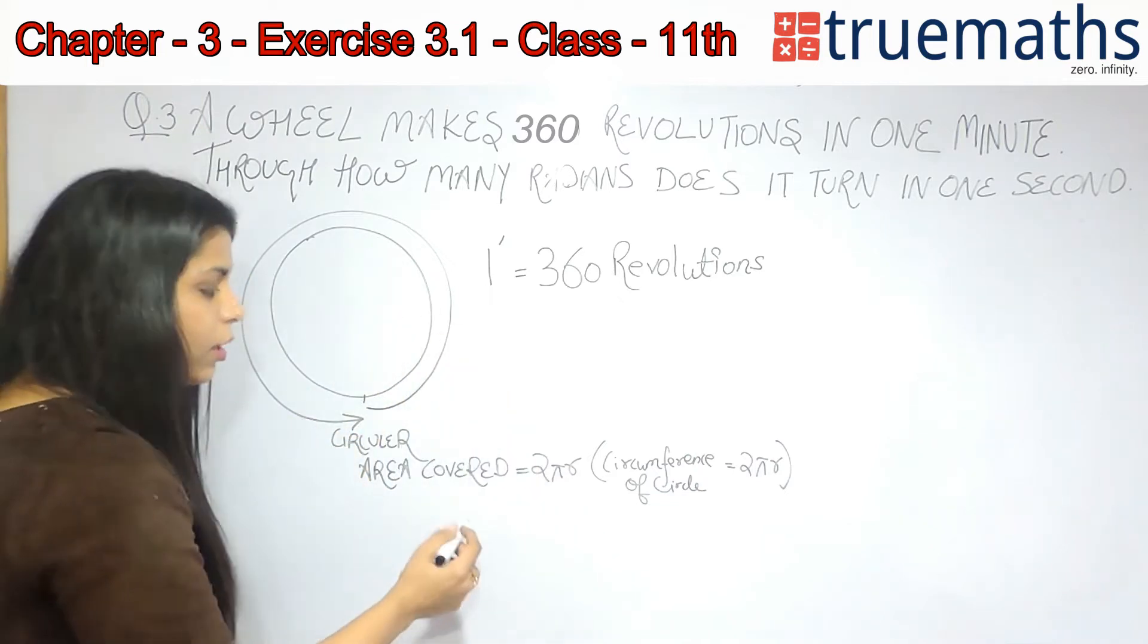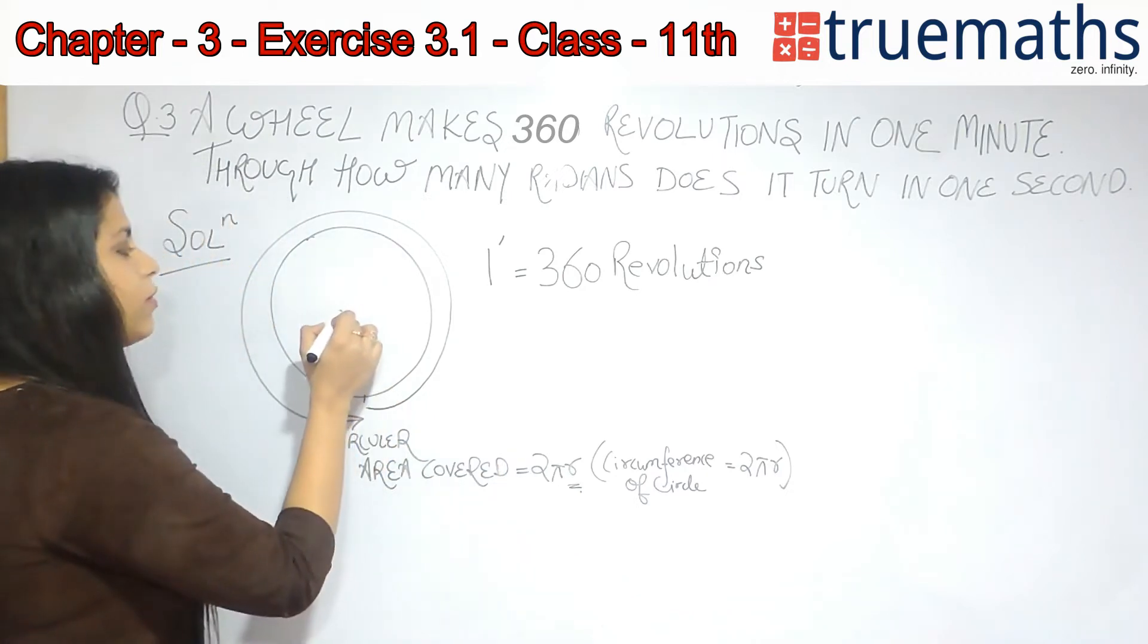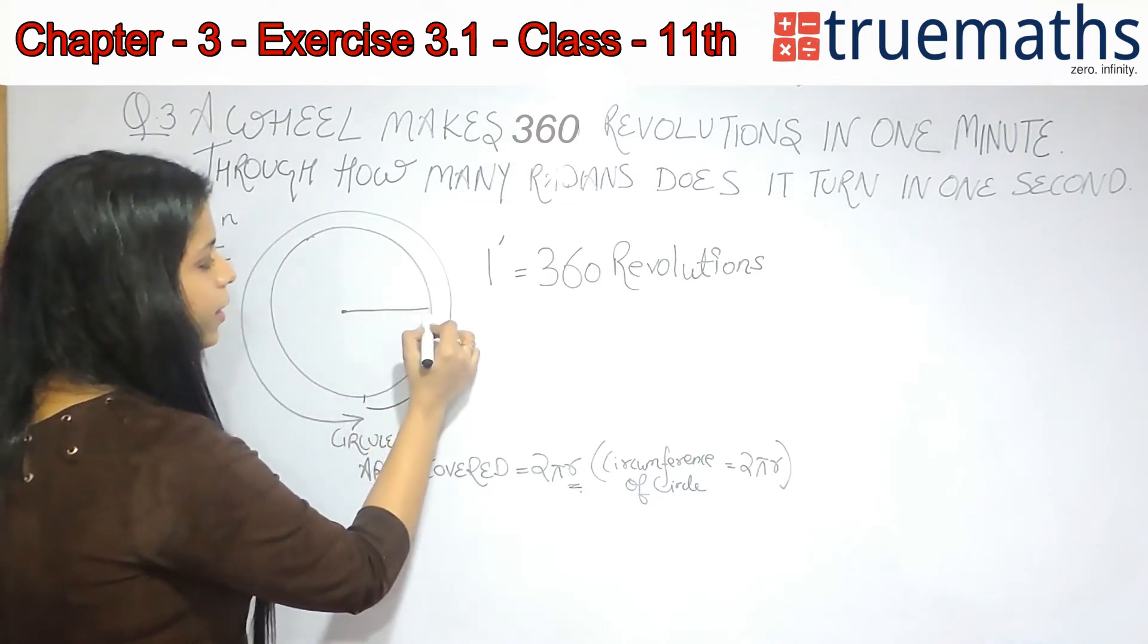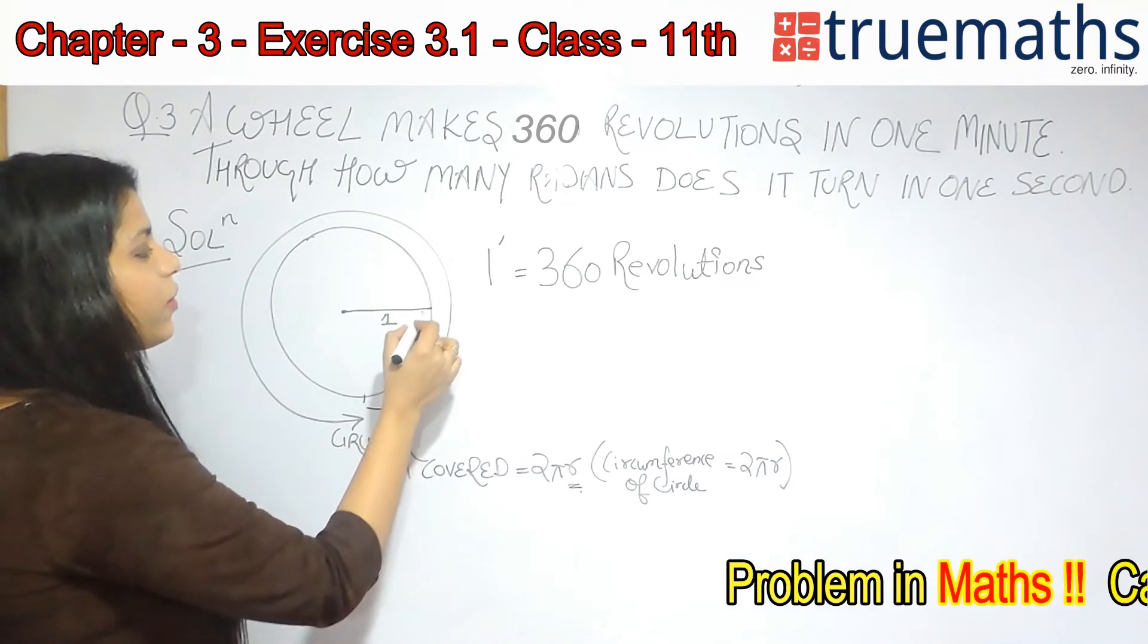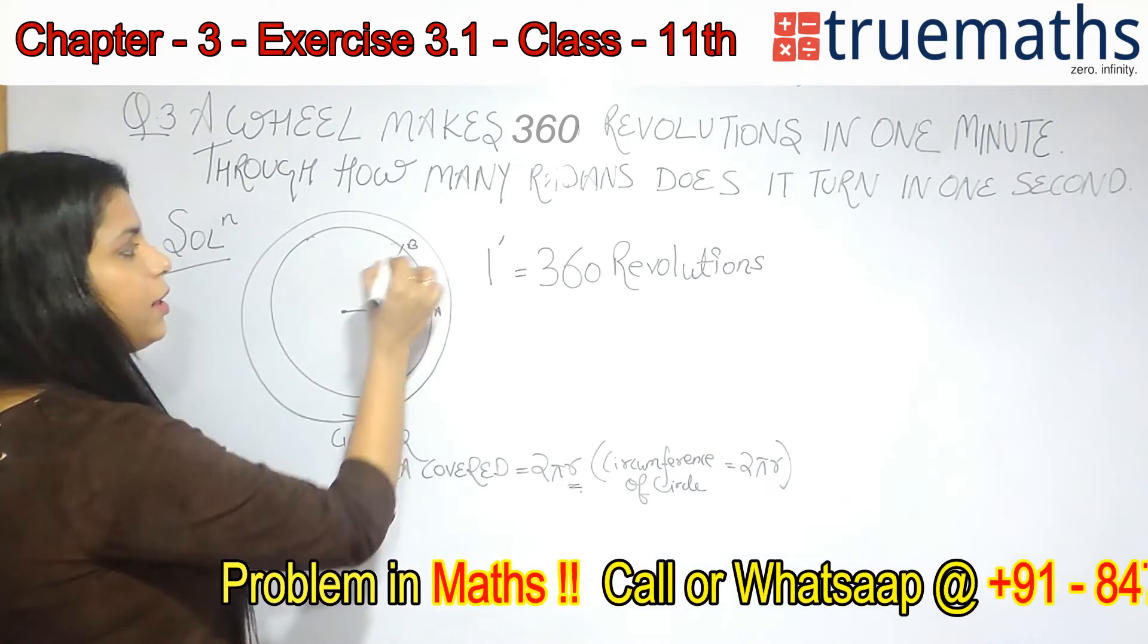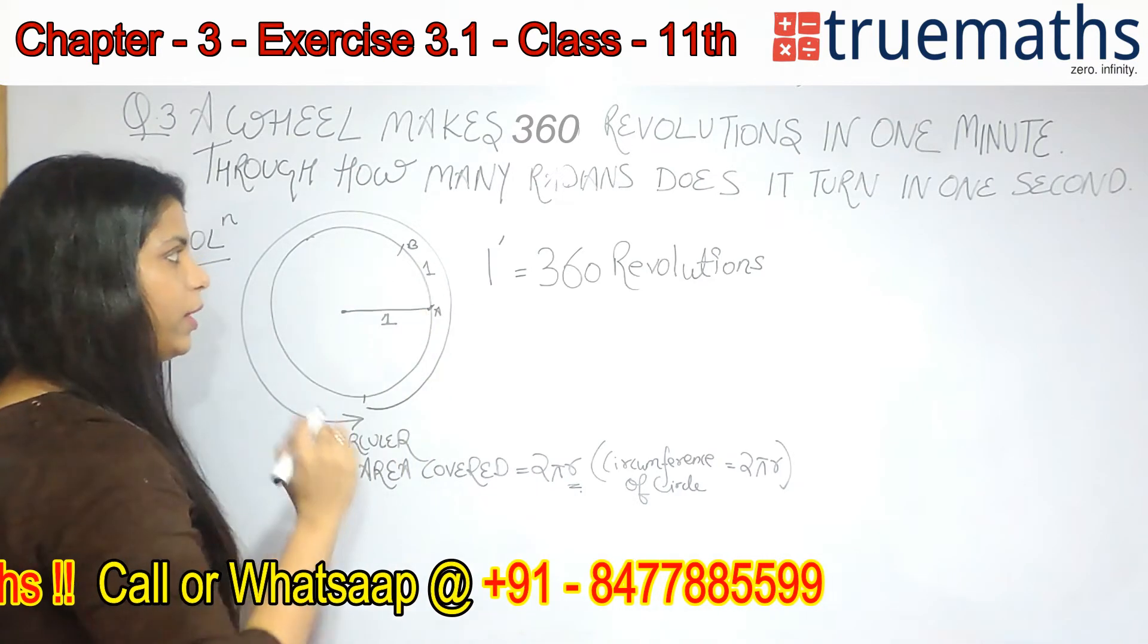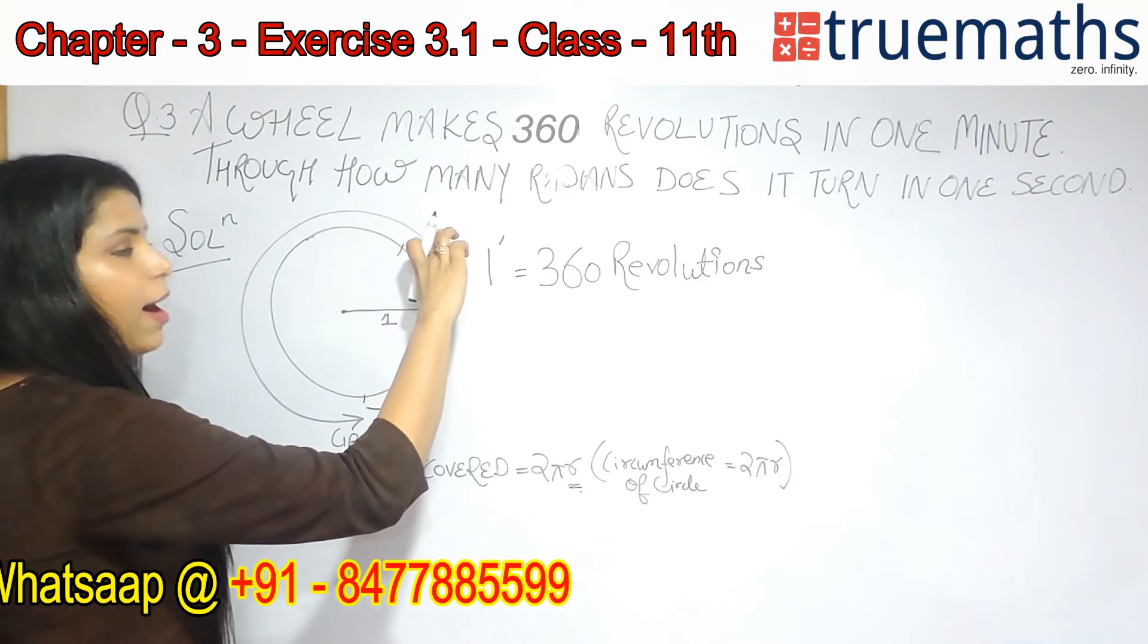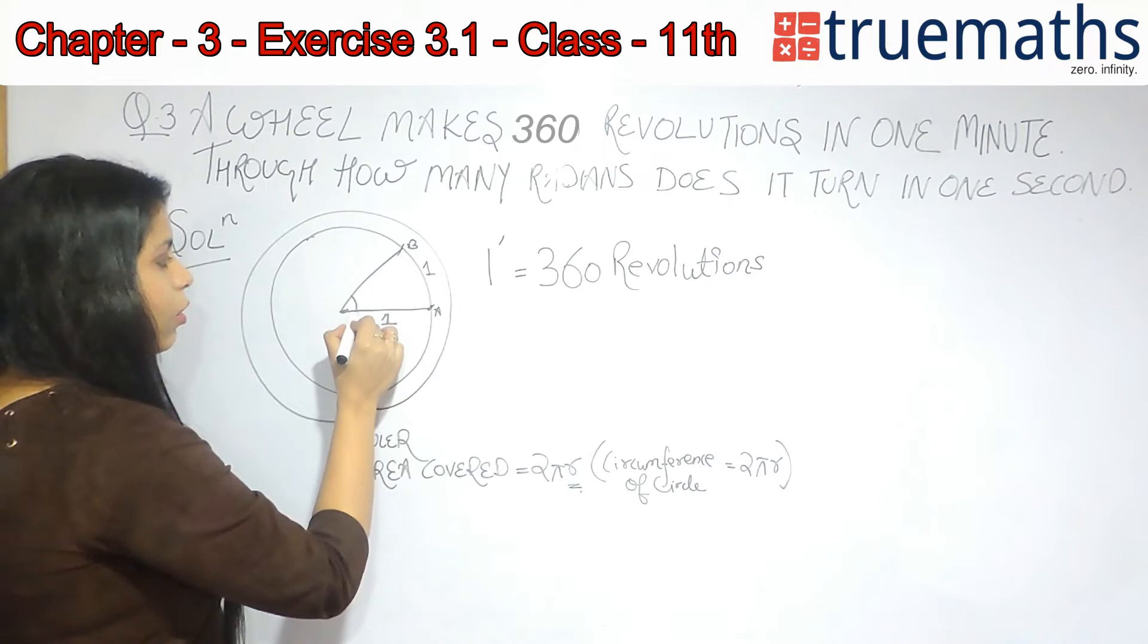Now this r value, basically if there is a circle of unit radius, that is the radius of the circle is 1, and if I say there is an arc A and B of unit length, that is 1 unit,